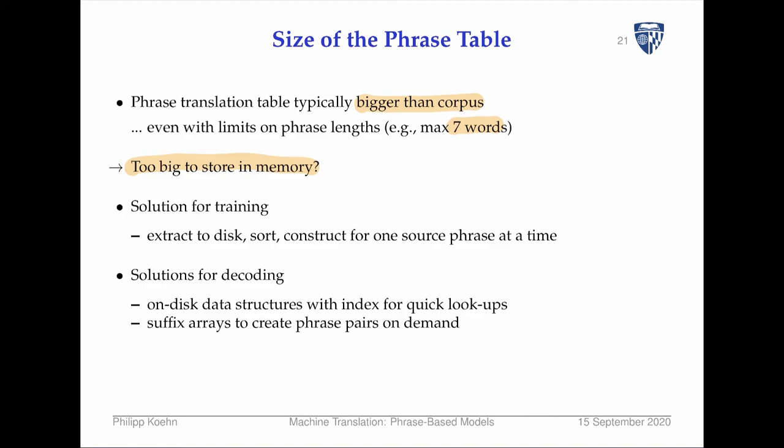One approach at training time is to do it on disk — save everything on disk and do disk operations at decoding time. There's also a problem of speed and lookup, and people came up with very fancy data structures that index things. There was also the idea of using suffix arrays to create phrase pairs on demand — just store the corpus and word alignment and estimate translation probabilities when you come across a sentence. That was surprisingly fast.